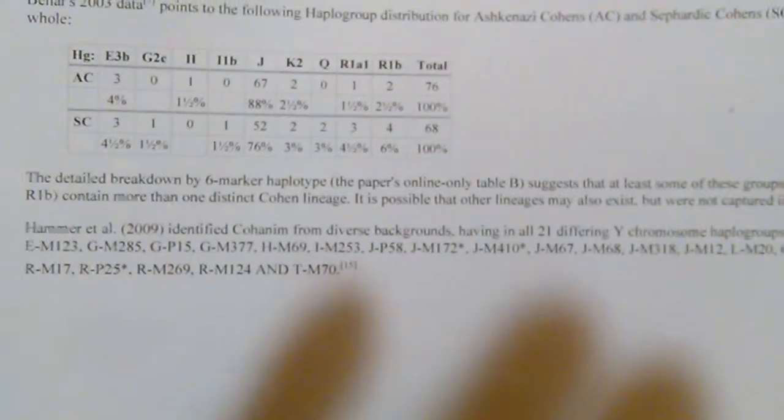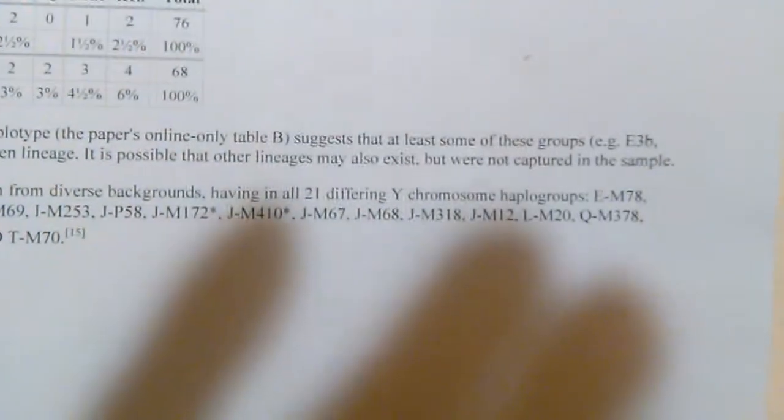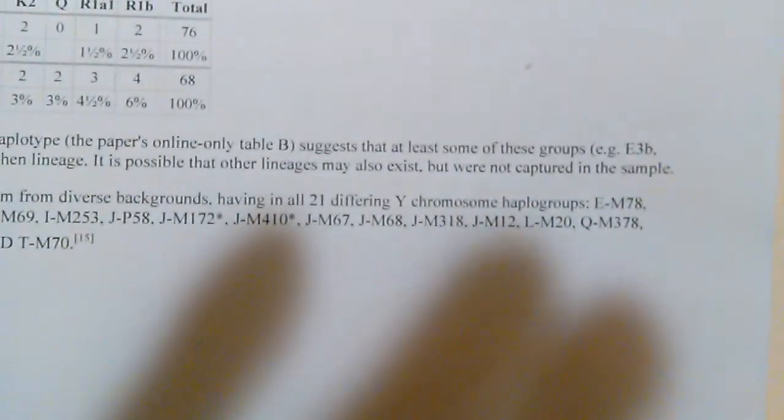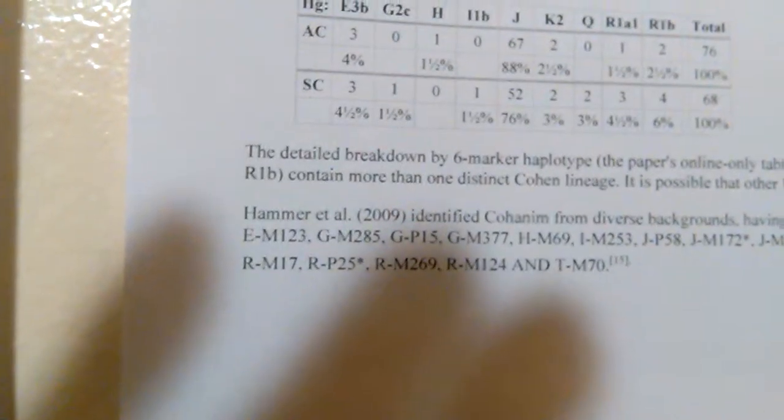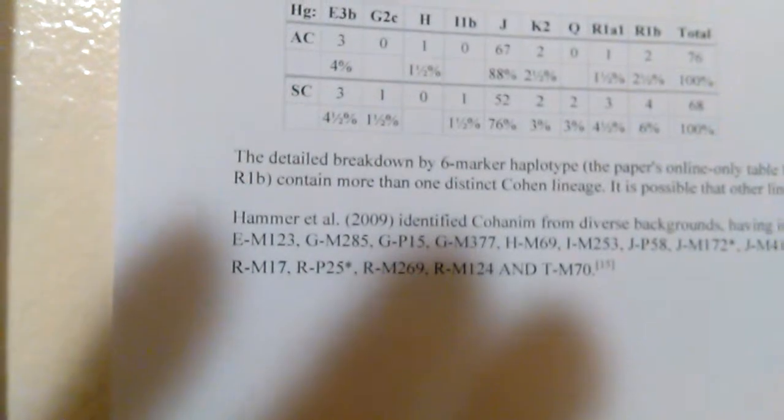According to Dr. Michael F. Hammer, who's the chief scientist with Family Tree DNA, he found 21 different haplogroups for the Kohenium gene. You can research this yourself, and you'll see E-M78 is the first one — we just found that one.